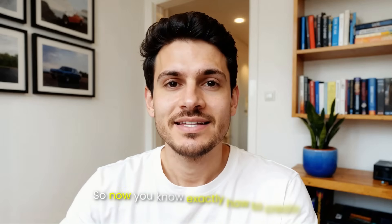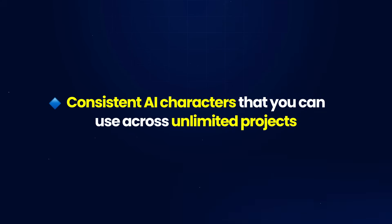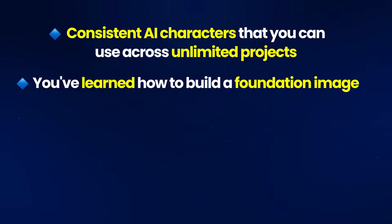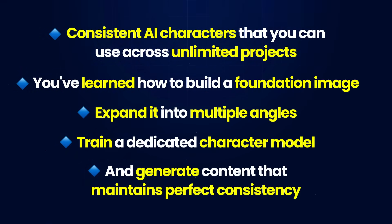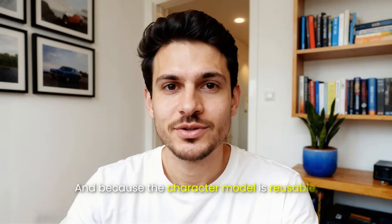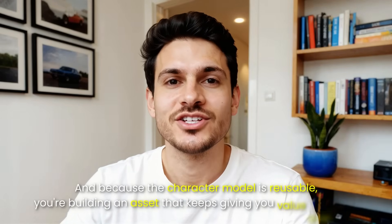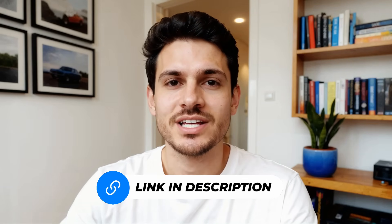So now you know exactly how to create consistent AI characters that you can use across unlimited projects. You've learned how to build a foundation image, expand it into multiple angles, train a dedicated character model, and generate content that maintains perfect consistency. And because the character model is reusable, you're building an asset that keeps giving you value over time. If you want to start creating your own consistent characters right now, click the link in the description to sign up for OpenArt. Thanks for watching and I'll see you in the next one.